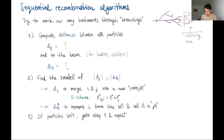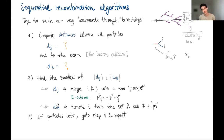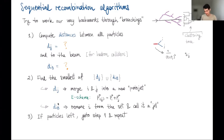One natural choice is the invariant mass S_ij = (p_i + p_j)², motivated by the propagator structure that generates divergent behavior. This was used in the JADE algorithm for e+e- collisions. Unfortunately, it turns out to be a very bad choice and is no longer in use.